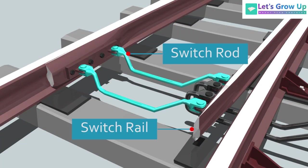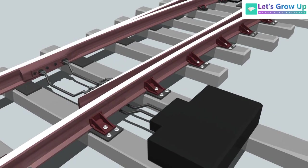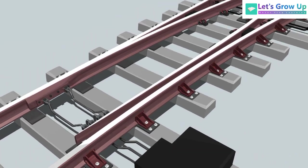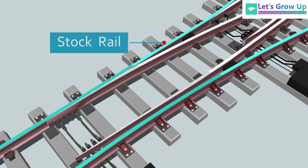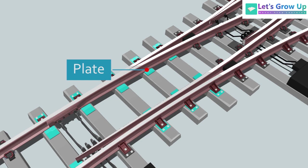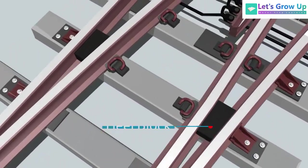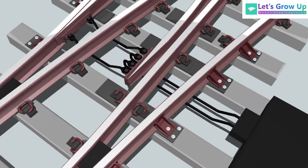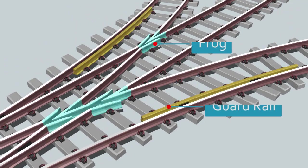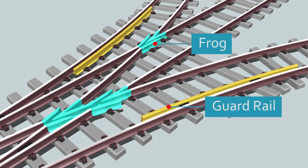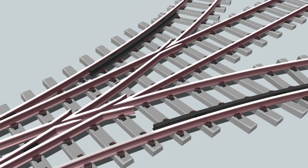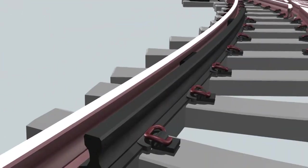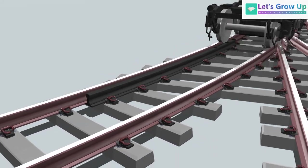Let's understand some important components: switch rail, switch rod, switch machine, stock rail, point rail — also named switch rail or point blades — plate, and heel block. The frog and guard rail section is made up of guard rail, wing rail, and railway frog. It ensures the safety of trains while passing through the junction of two routes.